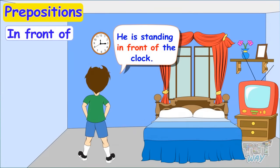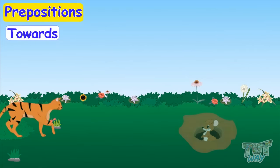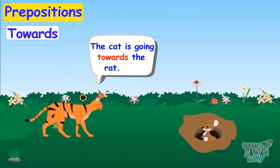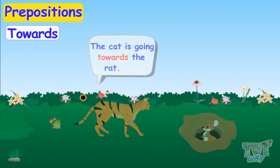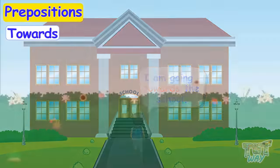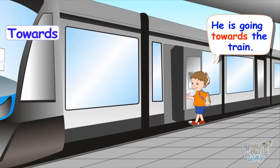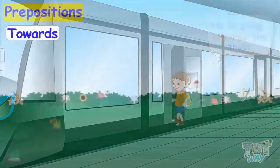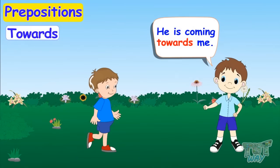Next preposition: 'towards'. The cat is going towards the rat. I am going towards the school. He is going towards the train. He is coming towards me.